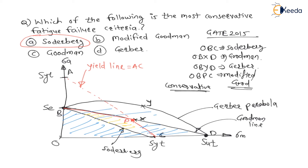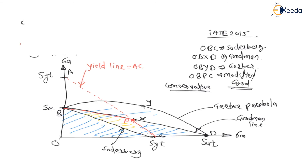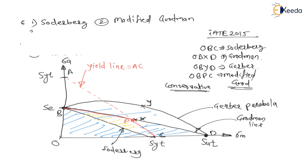Ranking them by conservativeness: number one, most conservative, is Soderbergh; second is modified Goodman, which is conservative but less so than Soderbergh; third is Goodman; and fourth — least conservative — is Gerber. Therefore, the answer to this question is Soderbergh.